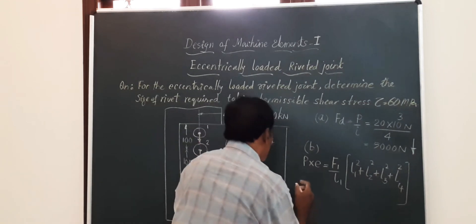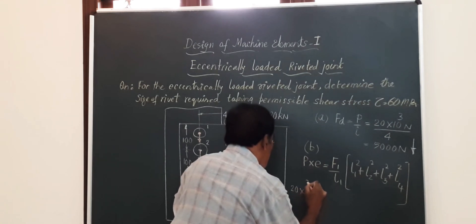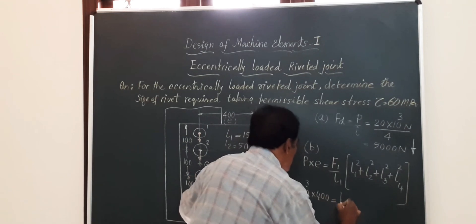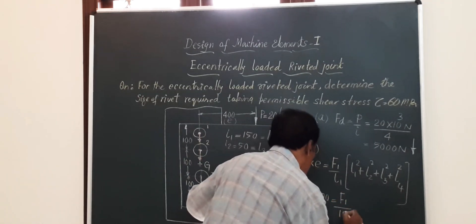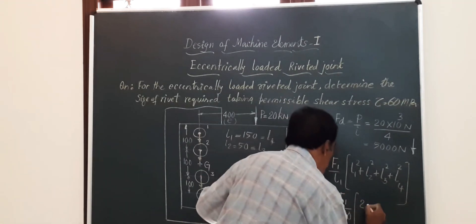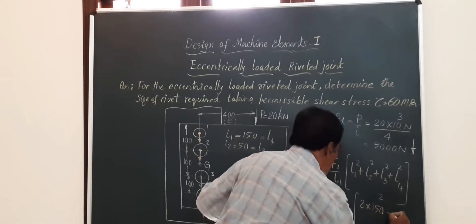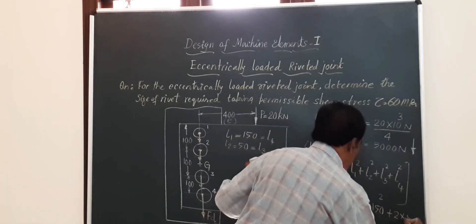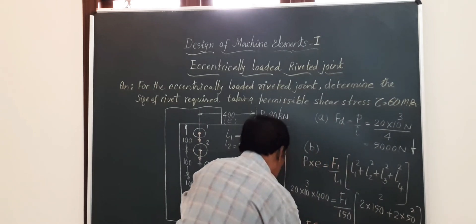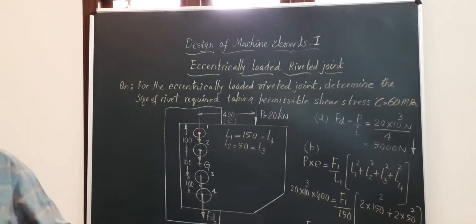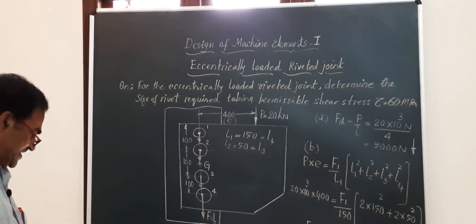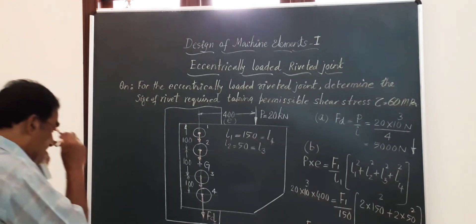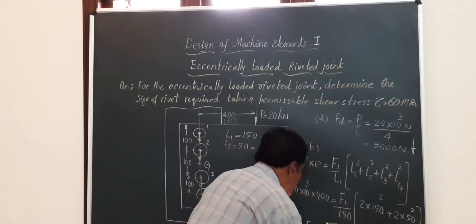Substituting the values: 20×10³ × 400 = (F1/150) × (2×150² + 2×50²). Solving this, F1 works out to 16,000 N. So F1 = 16,000 N is the secondary load acting at rivet number one.